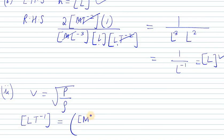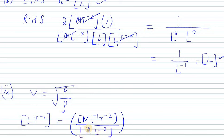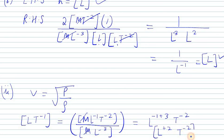For the right-hand side: pressure is ML⁻¹T⁻², and density ρ is ML⁻³. M and M cancel. We are left with L⁻¹⁺³ = L² and T⁻². Taking the square root (power of half) gives L and T⁻¹, which matches the left-hand side. So left-hand side equals right-hand side, and Part B is dimensionally correct.